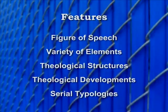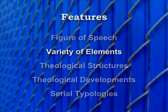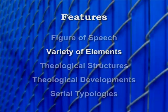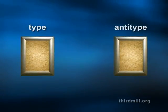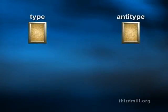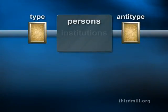A second feature of biblical typology is that compared elements are quite varied — comparisons are made between different kinds of things. There are many ways of classifying the elements that function as types and anti-types, but it's helpful to think of them in three basic groups: types and anti-types may be significant persons, institutions, or events.